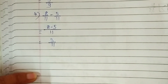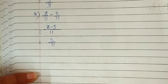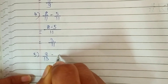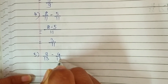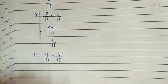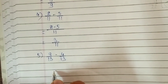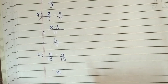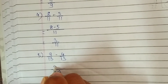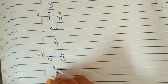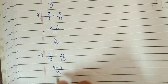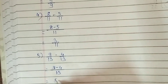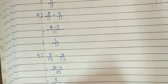The fifth question is 9 upon 13 minus 4 upon 13. Now you understand it very well — we are going to write 13 as a common denominator and subtract the numerators. 9 minus 4 gives us 5 upon 13 as the answer.